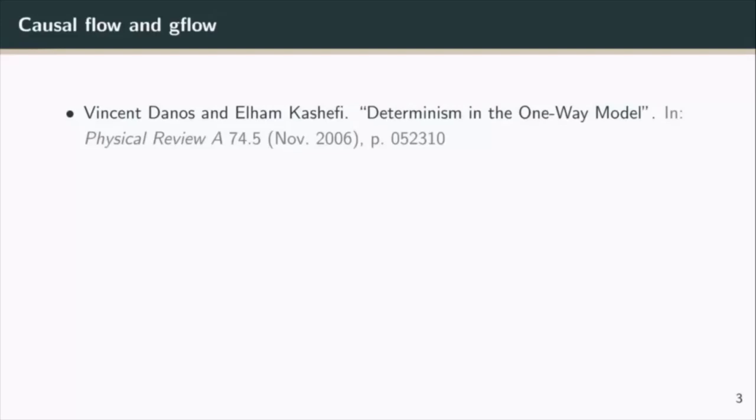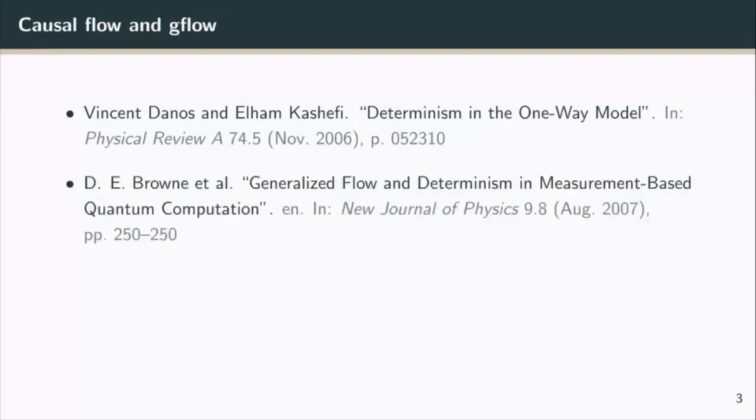This original condition was generalized about a year later, and essentially the meat of our work involved taking these qubit conditions and transferring them to the continuous variables or CV setting. As we'll see, the original causal flow condition works almost identically in CV, and we also produced a similar generalization which we call CV flow, which is very similar to but subtly different from G flow, generalized flow.